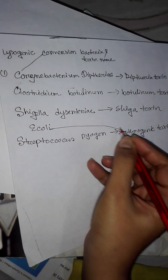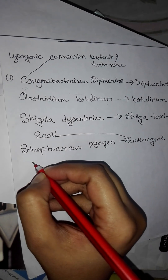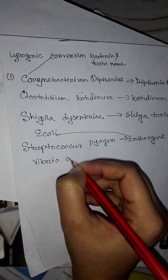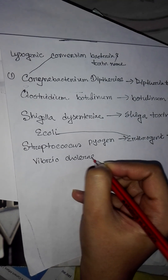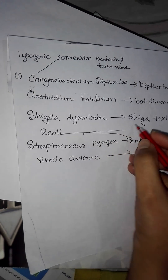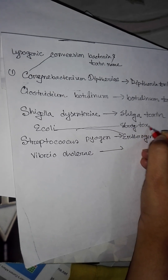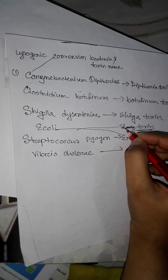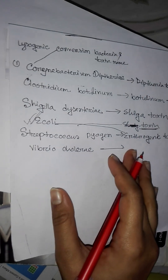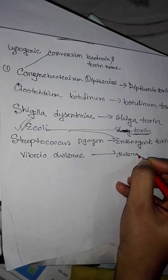E. coli also undergoes lysogenic conversion and produces the Shiga toxin. Vibrio cholerae produces the cholera toxin.